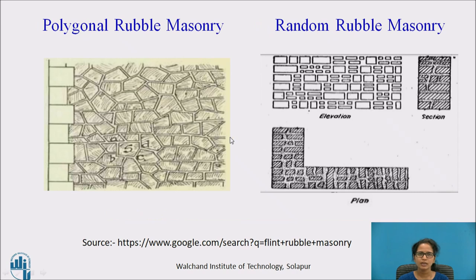Next we have polygonal rubble masonry. In this type of masonry, the stones are properly shaped to a polygonal shape. Small stone chips are not used in this type of masonry, and the vertical joint is not maintained.